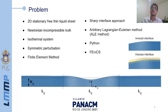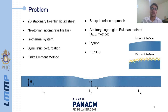Our problem is defined as follows. We have a planar flow of a stationary free thin liquid sheet. The bulk of the sheet is an incompressible Newtonian fluid, and we impose a symmetric perturbation on the free surfaces and consider the effects of capillarity, interface viscosity, and intermolecular attraction between the free surfaces through the van der Waals forces.